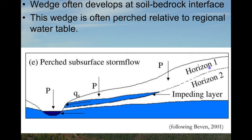This is illustrated in the drawing here. We can think of horizon one as the soil and horizon two as the underlying parent material. Down below you have your regular groundwater flow happening, but up above you get this transient zone of saturation that is perched relative to the regional water table. So now we have two separate flow systems feeding into the stream.